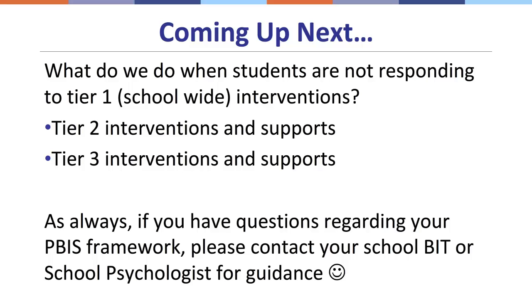Our next part of the PBIS Power Series is going to look at what happens when Tier 1 interventions aren't working. From a three-tiered model, Tier 1 should be proactive to reach 80% of our students, which still leaves about 20% that might need some type of strategy or intervention. Our next presentation will talk about these strategies at Tier 2 and Tier 3. If you have questions about this presentation, how to look at data, where to find your data, or what kind of data you might want to be analyzing, please contact your school psychologist or your behavior intervention teacher.